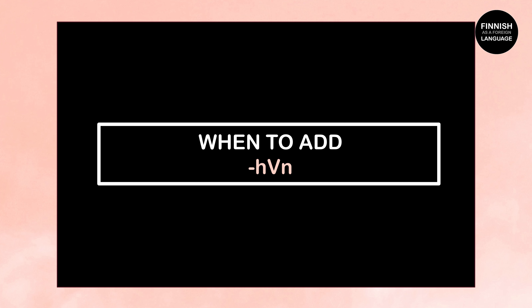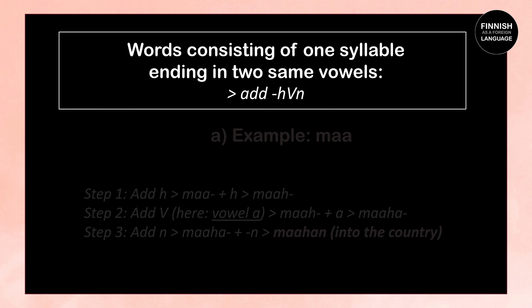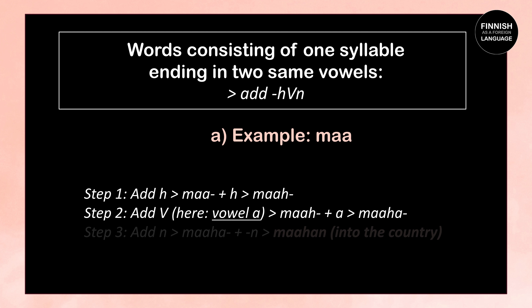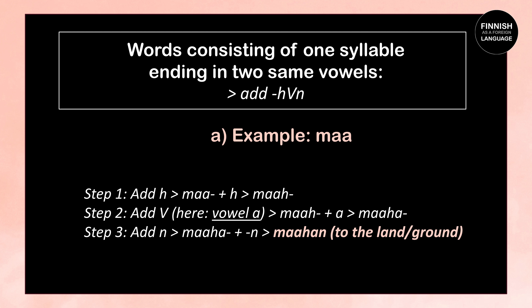The second illative ending is H+vowel+N. When we have a word consisting of one syllable ending in two same vowels, we add this ending. For example: maa means ground or land. In the first step we add the letter H: maa + H = maah. Then we add the vowel A: maah + A = maaha. Then we add N: maaha + N = maahan, which means into or to the land.